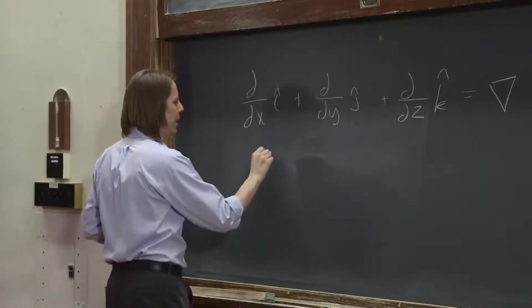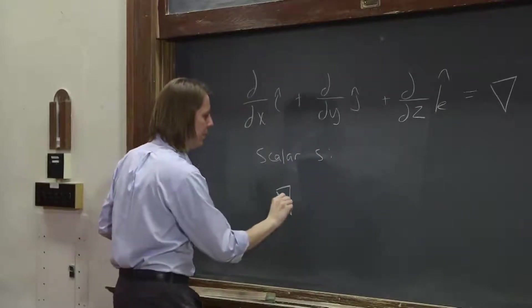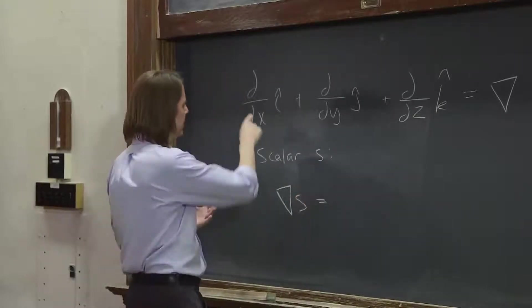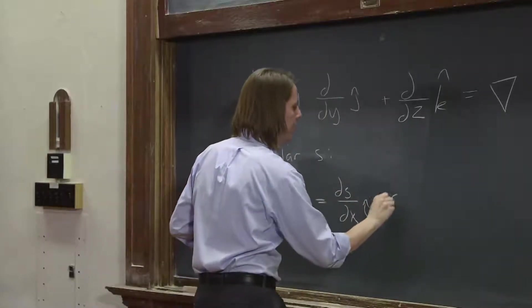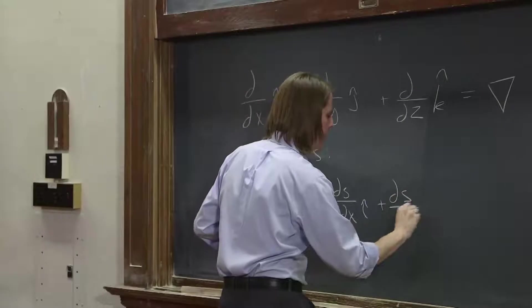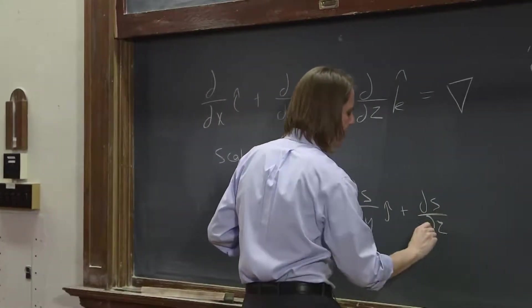So for example, if we have the scalar field S, then del S is dS/dx i hat plus dS/dy j hat plus dS, in this case we're doing all three dimensions, dz k hat.